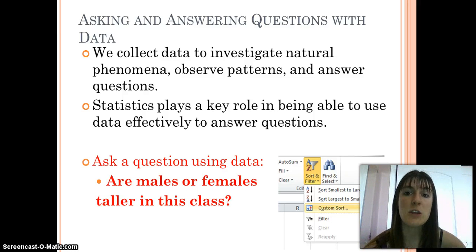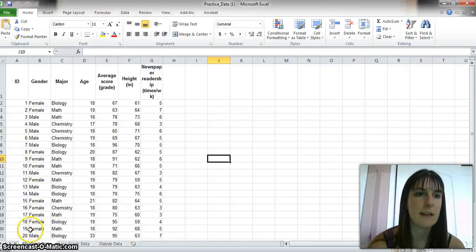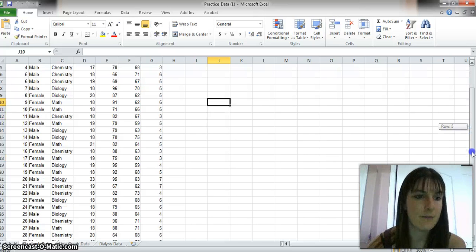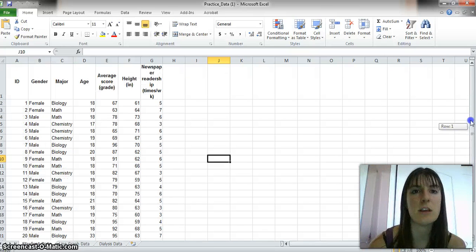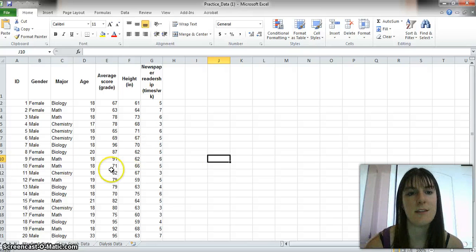I'm going to use a data set as an example and show you how to do this on Excel. I expect that you learn to use Excel at least enough to do these basic statistics. This data set has a random ID number for students, their gender, major, age, score, height, and newspaper readership. With this information, we can ask questions and use statistics to answer them.